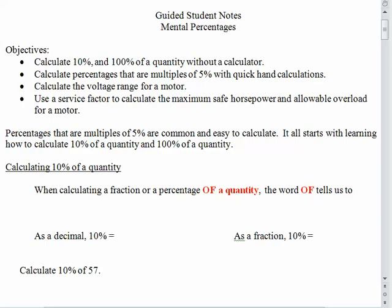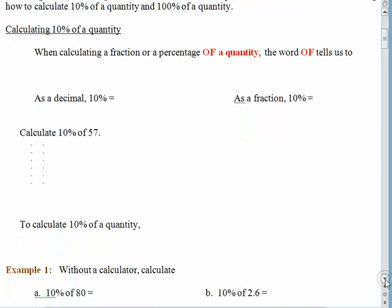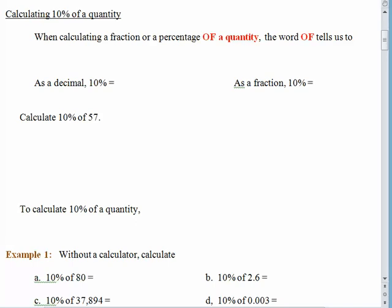We're going to be talking about percentages that are multiples of 5%: 5%, 10%, 15%, 20%, but our key places are going to be 10% and 100%. From there, we're going to build up to everything else. Our first goal is to figure out how to calculate 10% of something. You'll remember when we were working with a fraction of an amount, we used that word 'of' to remind us that we needed to multiply. You know that the decimal equivalent of 10% is 0.1, otherwise known as the fractional equivalent, 1 tenth.